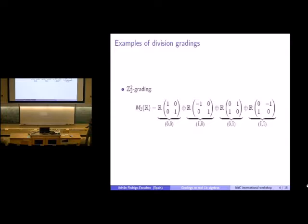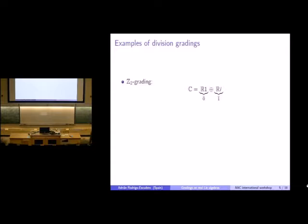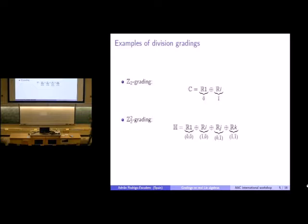Another very natural example is the complex numbers: we can split them into real part and imaginary part to get a Z_2 grading. This is not only a graded division algebra but a division algebra. The same idea applies for the quaternions: we assign i, j, k degrees in Z_2 squared to get a division grading—in fact, this is a division algebra.